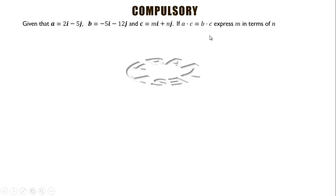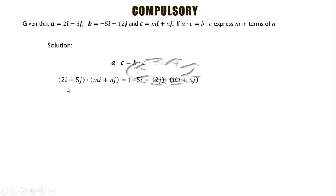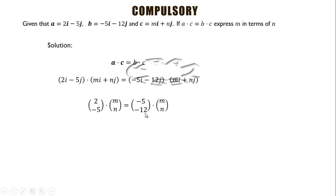The question continues: if a·c = b·c, express m in terms of n. So we dot both vectors. Vector a is 2i − 5j and vector b is −5i − 12j, each dotted with vector c = mi + nj. Written as component vectors: (2, −5)·(m, n) = (−5, −12)·(m, n). We multiply corresponding components and add.